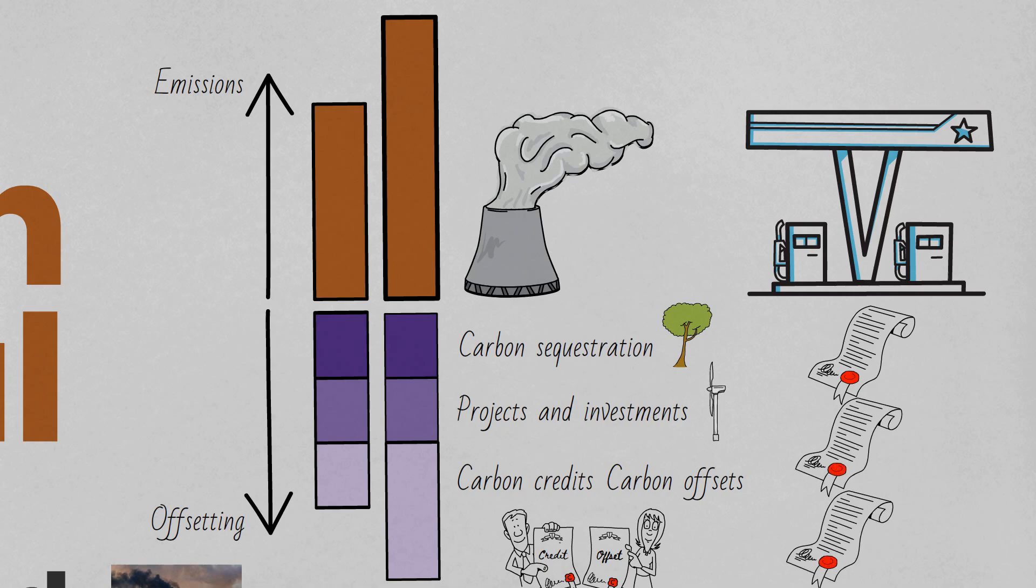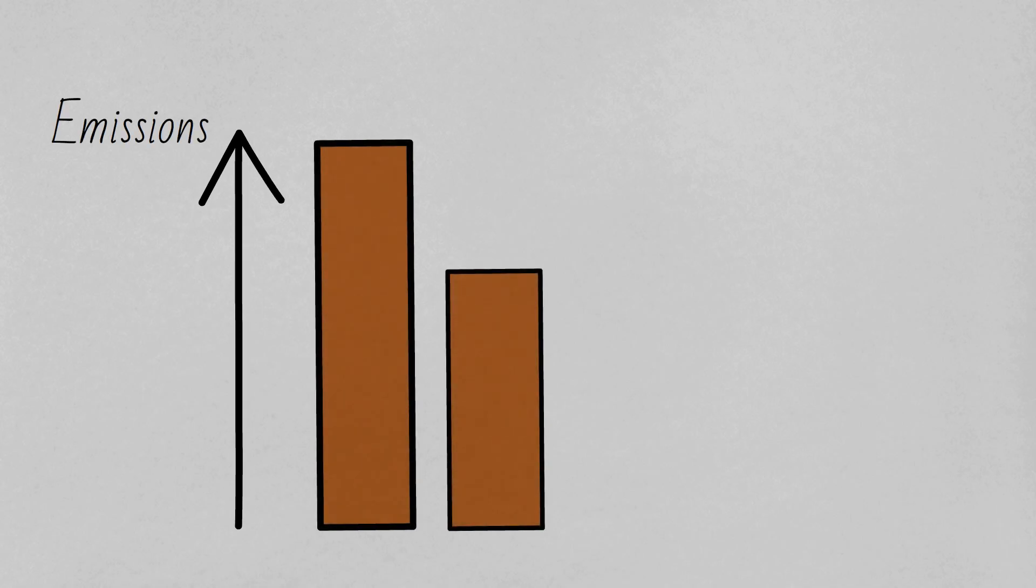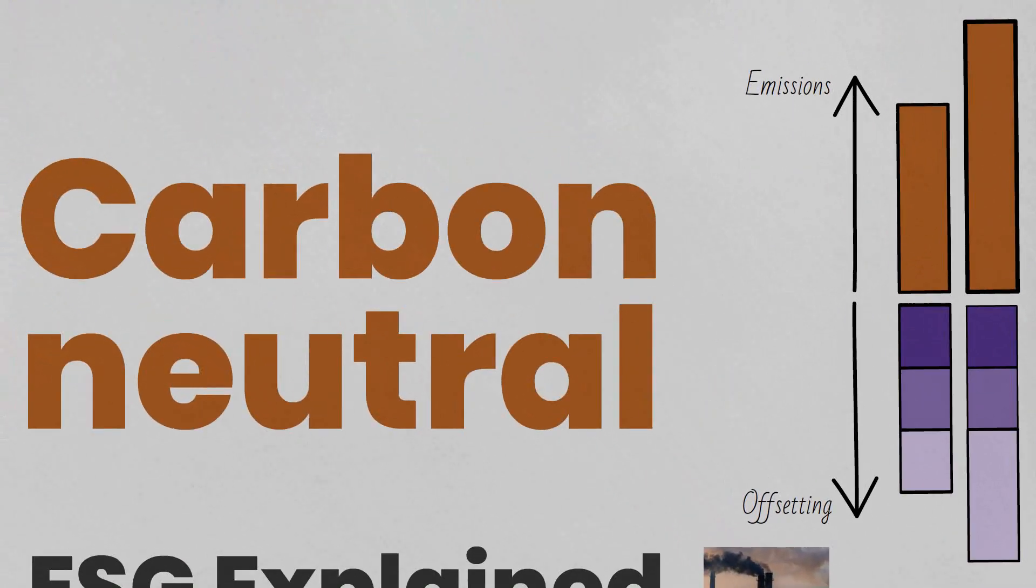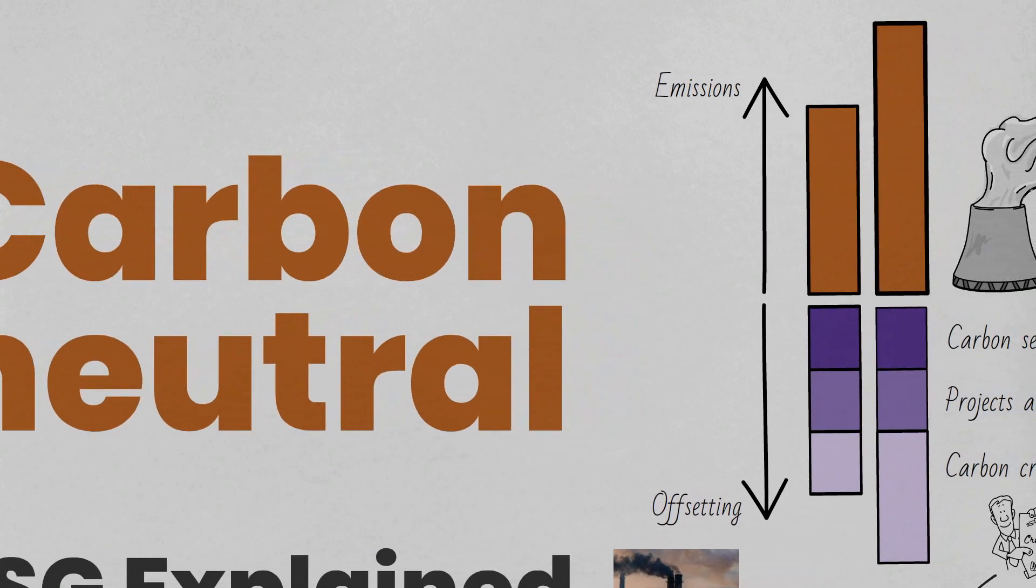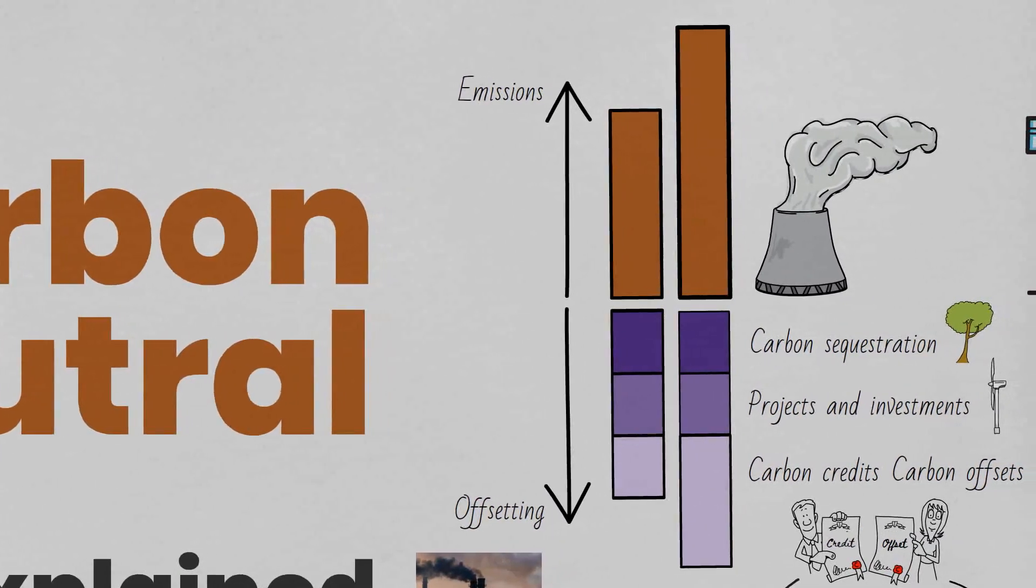So let's move on to the term net zero and what that means. Net zero means that the company has reduced its absolute emissions across its whole supply chain to the full extent possible. Note this key difference with carbon neutral, which doesn't in itself imply a reduction in carbon emissions, simply that it's balanced out by carbon offsetting activity.